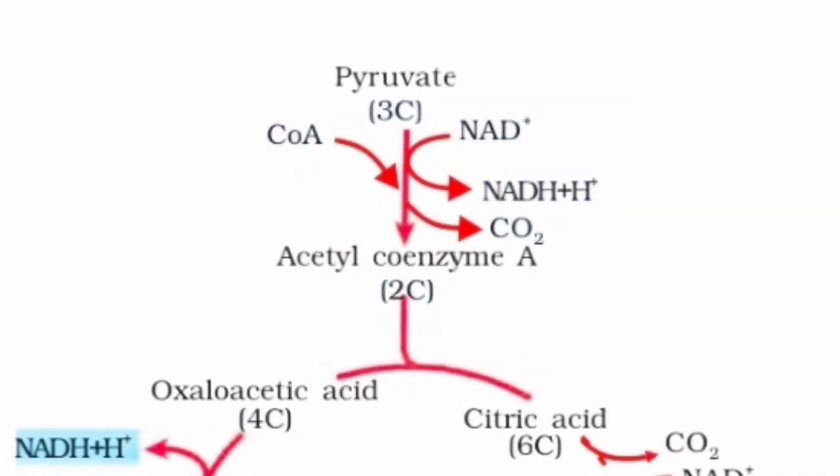From this NAD we will be getting three ATPs, and since we have two pyruvate molecules, we will be getting two molecules of NADH + H⁺. So on average we will be getting six ATPs from the link reaction.